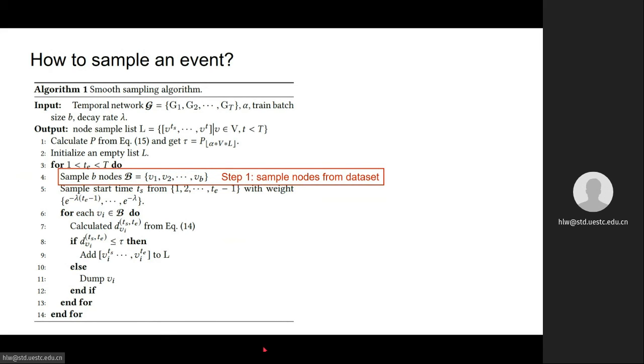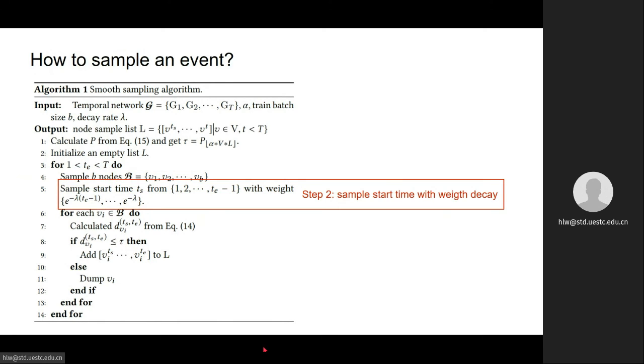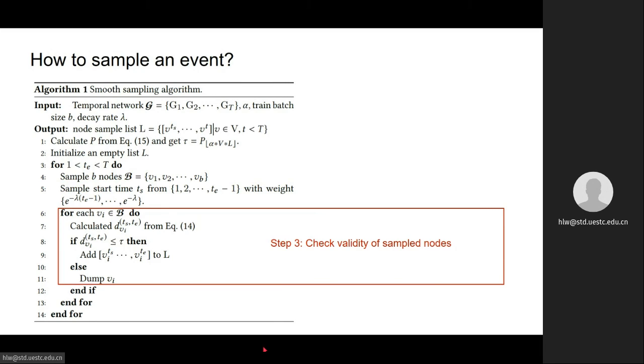Step one is to sample nodes randomly from dataset. Step two is to sample a start time t_s with weight decay. And the final step is to check whether sequences between t_s and t_e of all the sample nodes are smooth events by comparing the cosine distance with tau and keep the valid nodes and abandon the invalid nodes.